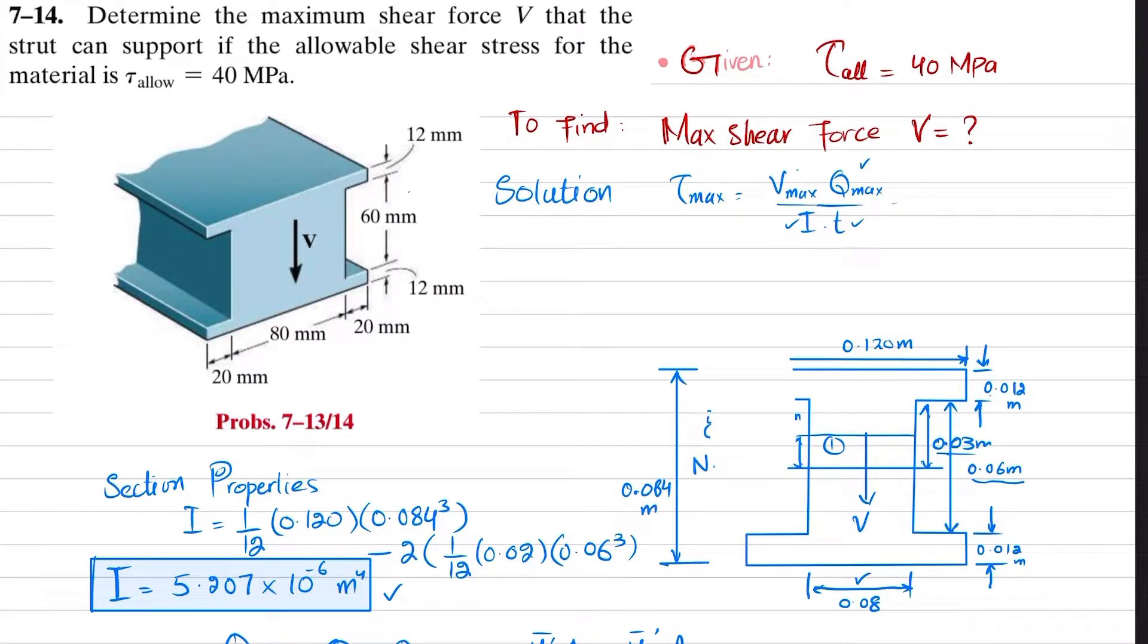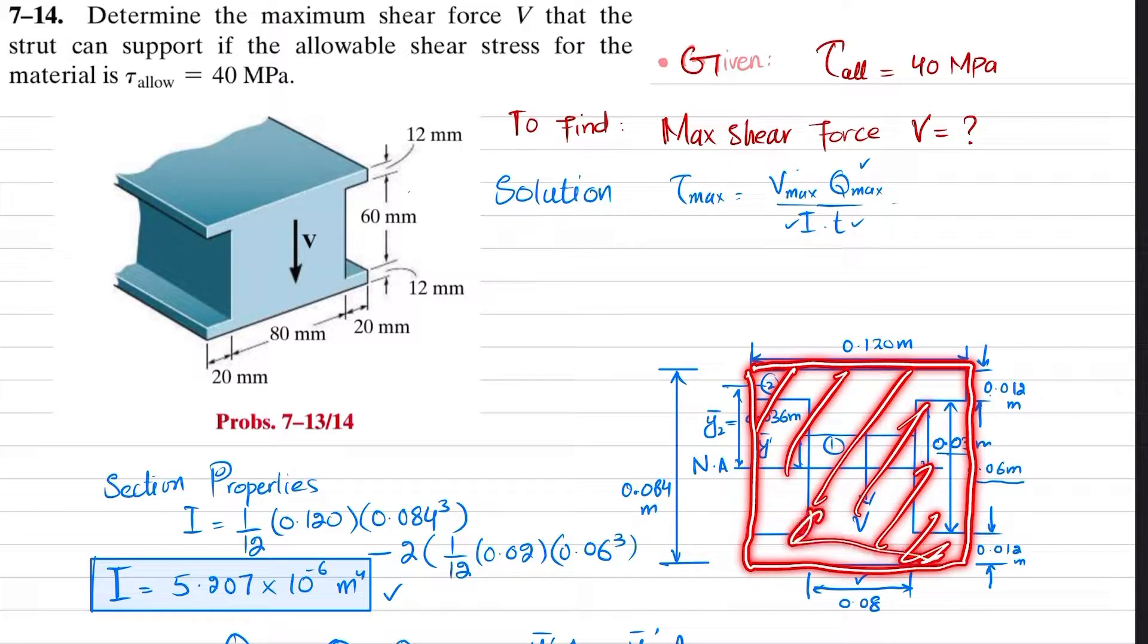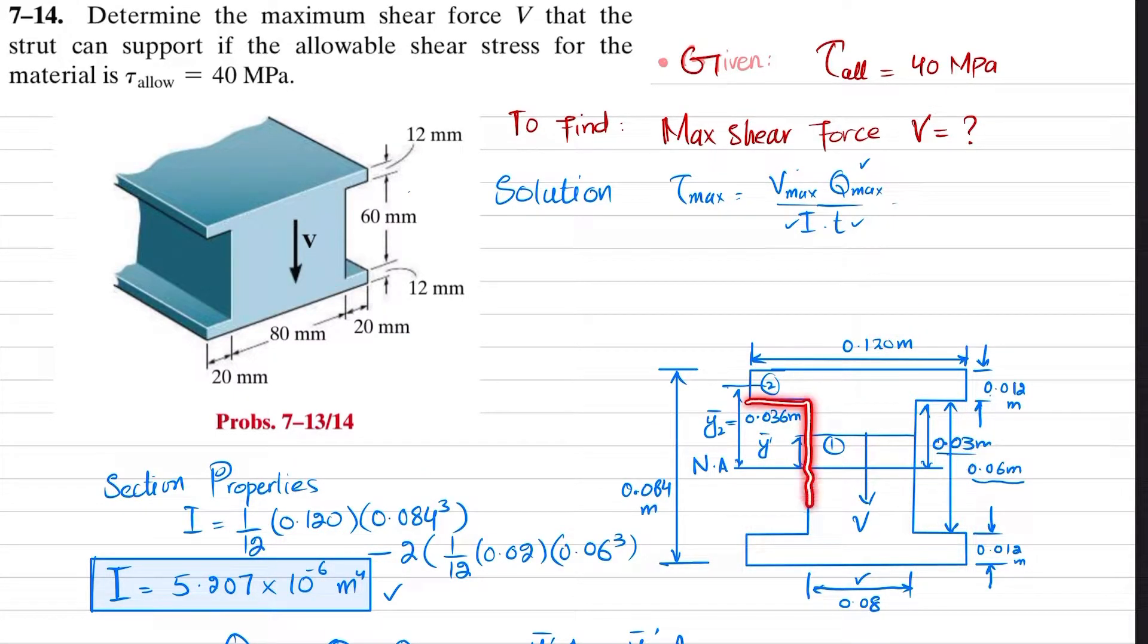For the moment of inertia, I have taken this whole cross-section. Its moment of inertia is 1 over 12 times the breadth, which is 0.012, times the height, which is 0.084. Then I subtract these two portions, which are the same. The width is 0.020 meters and height is 0.06 meters, so minus 2 times 1 over 12 times 0.02 times 0.06. This gives you the moment of inertia of this strut. I explained this in Problem 7-13.